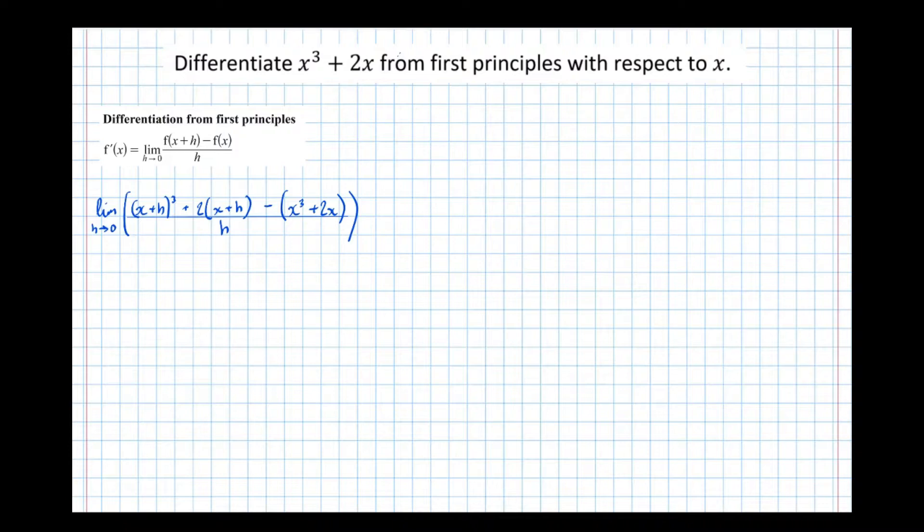Okay, so that line, if we do a bit of simplification, is equal to the limit as h approaches 0 of expanding x plus h cubed. You can use the binomial expansion, or you can just do triple brackets. Here, at the side, I'm going to do some triple brackets, so x plus h, x plus h, x plus h.